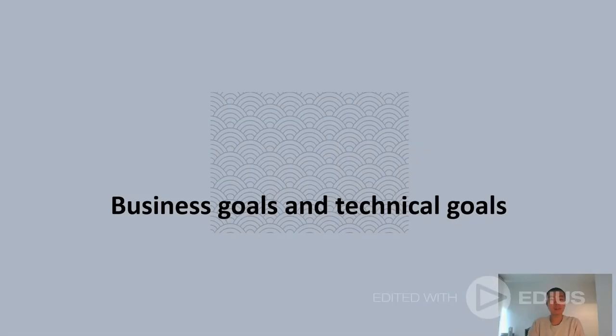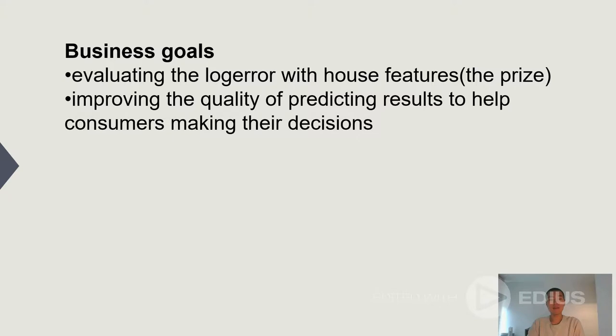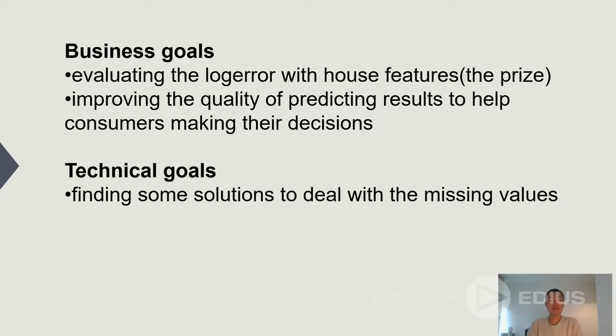Now we will specify our business goals and technical goals. Our business goals are evaluating the log error with house features, which represents the reliability of the prediction, and also improving the quality of predicting results to help consumers making their decisions. We have also two technical goals: first, finding some solutions to deal with missing values in the datasets; second, defining an appropriate predicting model.